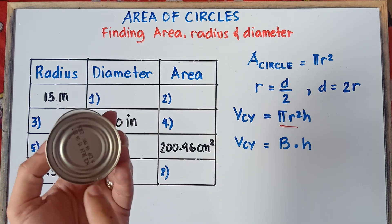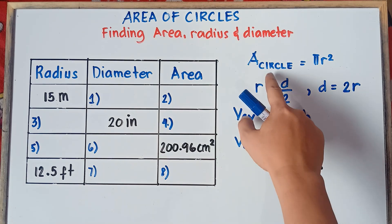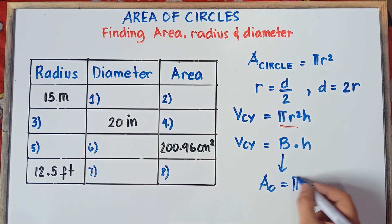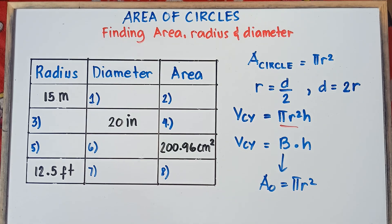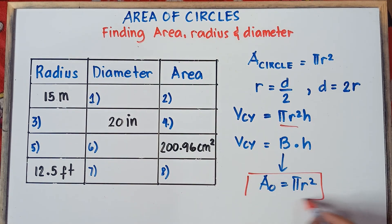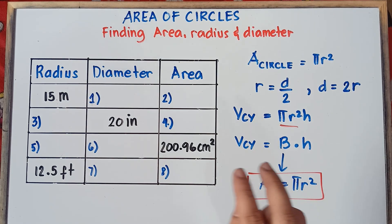For any kind of cylinder, the shape of the base is always a circle. And to find the area of this base, we need to use the area of the circle formula. So to find the area of the base, that would be: area of a circle equals pi r squared. There is a relationship between the area of the base, the area of the circle, and the volume of a cylinder.